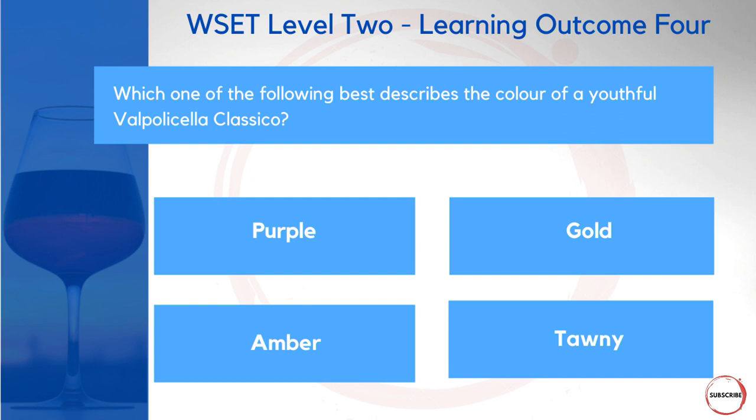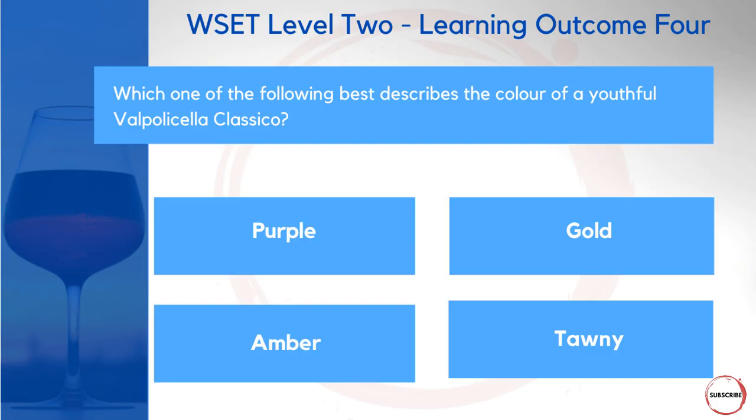Moving on to a characteristic question based on the appearance of a wine: which of the following best describes the colour of a youthful Valpolicella Classico? Would it be purple, gold, amber, or tawny? Valpolicella uses the Corvina grape — a black grape used to make red wines — which means gold and amber can be discounted. As we're also talking about a youthful wine, purple would be the appropriate colour here.